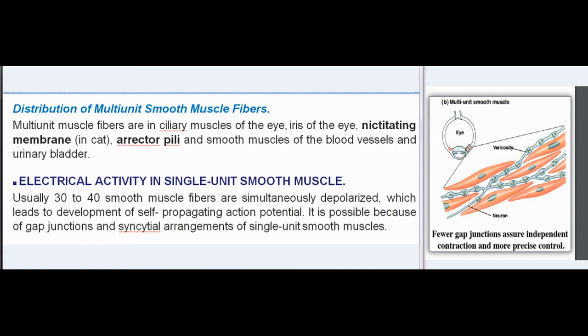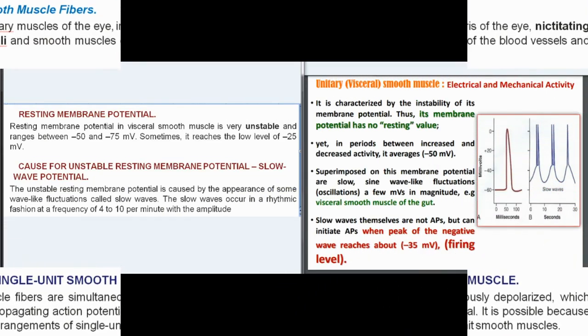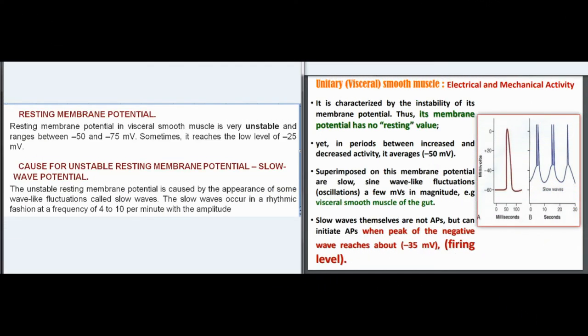Electrical activity in single unit smooth muscle: usually 30 to 40 smooth muscle fibers are simultaneously depolarized, which leads to development of self-propagating action potential. This is possible because of gap junctions and syncytial arrangements of single unit smooth muscles. Resting membrane potential in visceral smooth muscle is very unstable and ranges between 50 and 75 mV.